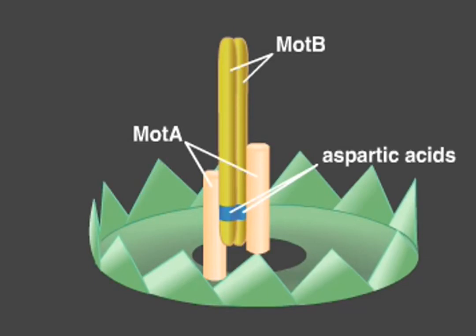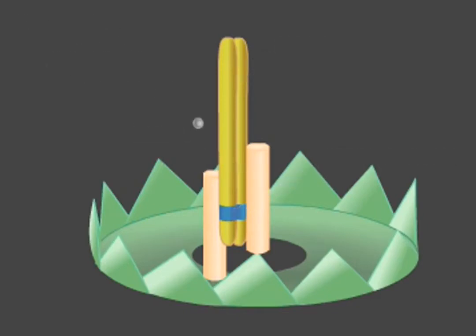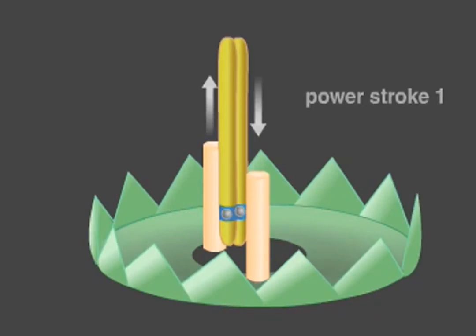Although the molecular mechanism of rotation is not known, one possible model describes protons moving through the channels in the stators and binding to the aspartic acid in the MotB proteins. This binding causes a conformational change in MotA proteins, resulting in the first power stroke that moves the rotor incrementally.